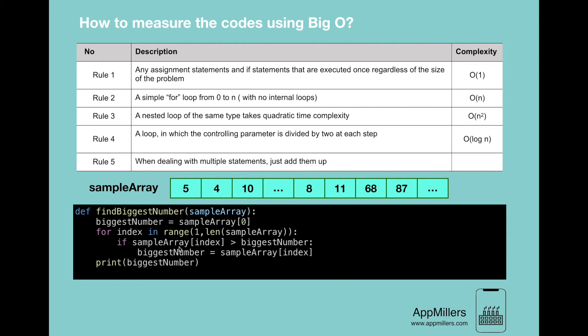Once the loop terminates, we print out the biggest number. So this is a simple method which finds the biggest number in the array. And the question is how we can measure this method using Big O.